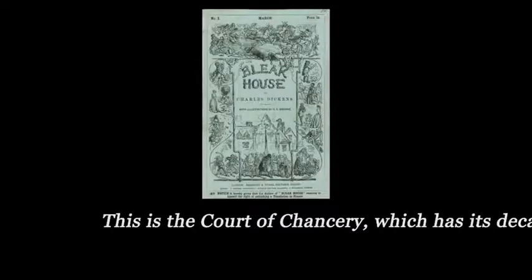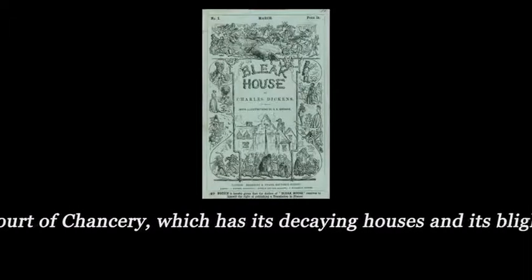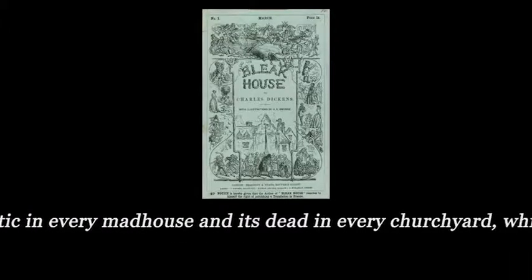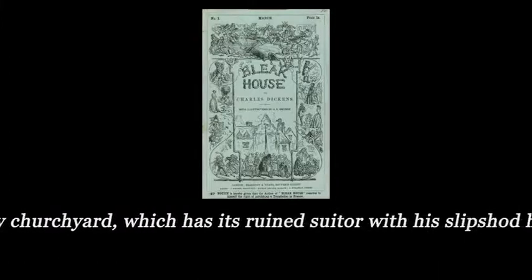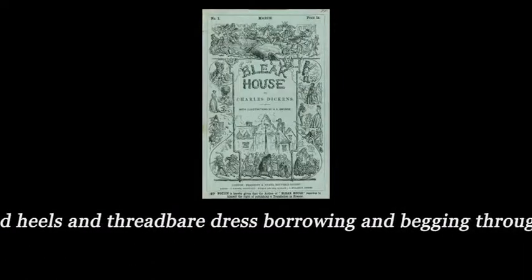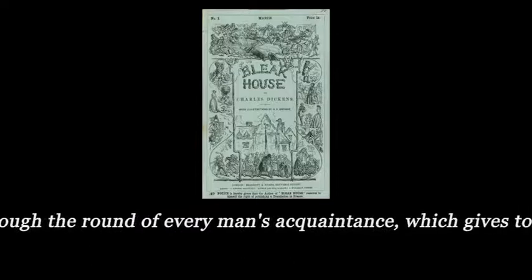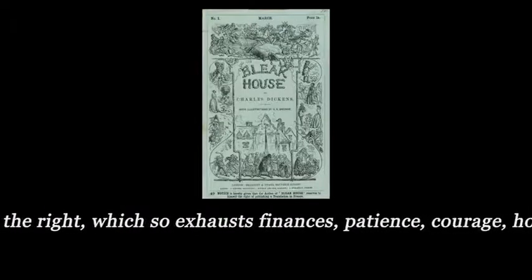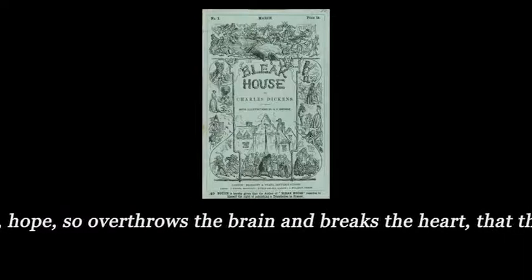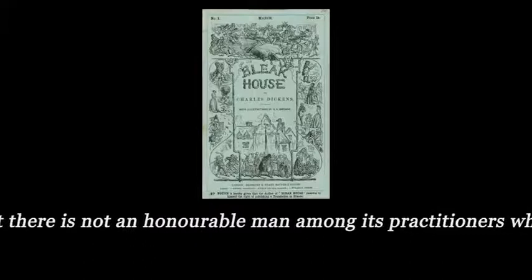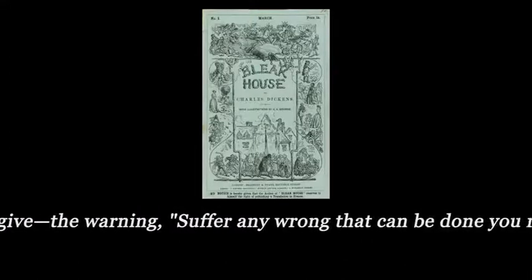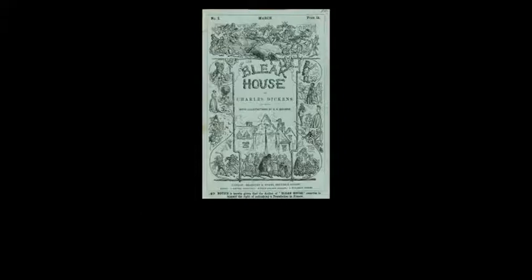He says in chapter one, he describes the Court of Chancery: This is the Court of Chancery which has its decaying houses and its blighted lands in every shire, which has its worn out lunatic in every madhouse and its dead in every churchyard, which has its ruined suitor with his slipshod heels and threadbare dress borrowing and begging through the round of every man's acquaintance, which gives to moneyed might the means abundantly of wearying out the right, which so exhausts finances, patience, courage, hope, so overthrows the brain and breaks the heart that there is not an honorable man among its practitioners who does not often give the warning: suffer any wrong that can be done you rather than come here. So as you see, Charles Dickens was not a fan of the Court of Chancery.